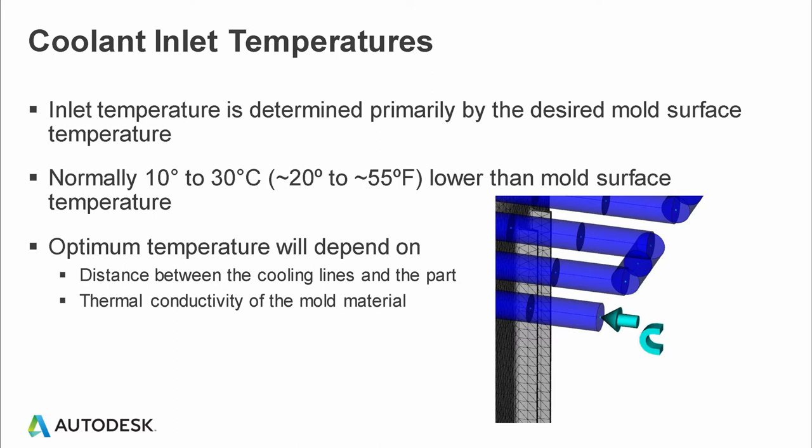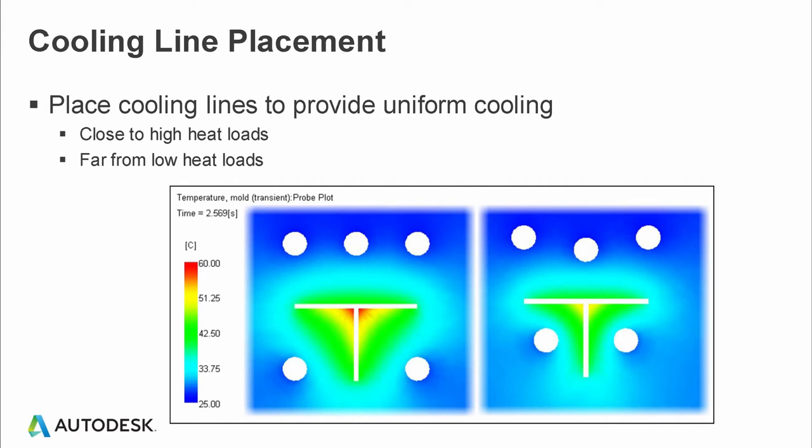The optimum temperature will depend on the distance between the cooling channels and the part, and the thermal conductivity of the mold material. Regarding cooling line placement — placing cooling lines to provide uniform cooling — there are calculations that can be worked out. I show these in the forthcoming slides. This example shows five cooling channels placed on the left-hand side that are not properly positioned, and through multiple analyses we can get insight into where these cooling channels should be placed.